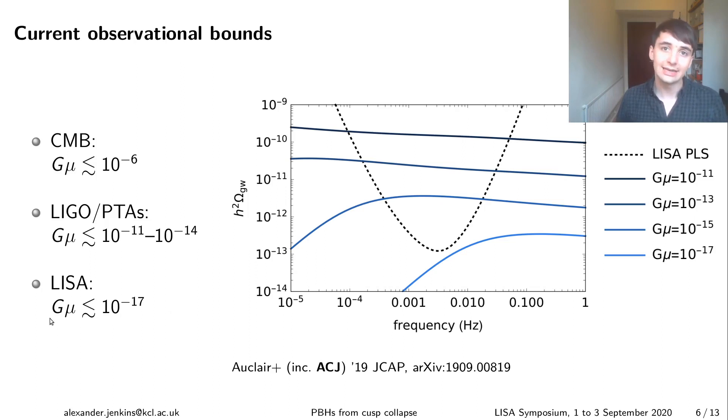However for LISA, we explored this in a cosmology working group paper that I was involved in last year, we find that sort of regardless of the loop network model we'll be able to constrain Gμ down to about 10^-17. So this is orders of magnitude better than any other experiment.